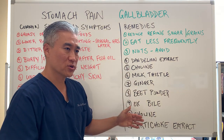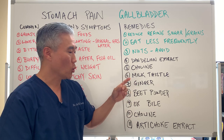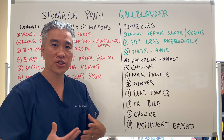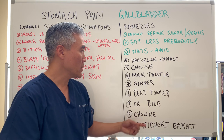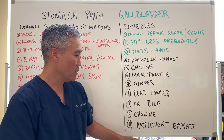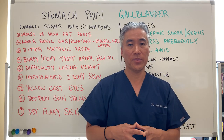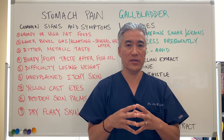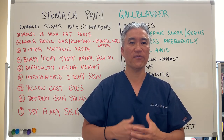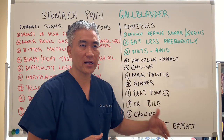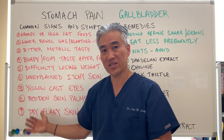Nutritionally and supplement-wise, there are many options: dandelion extract, choline, milk thistle, ginger extract, beet powder, ox bile, and artichoke extract. These nutritional supplements can help soften gallstones or gallbladder sludginess and get bile flowing better. Gallbladder support in this manner can be quite beneficial for people experiencing a lot of these symptoms.